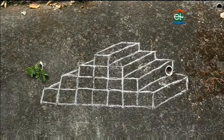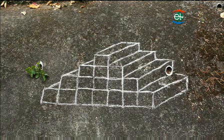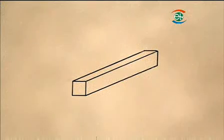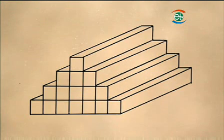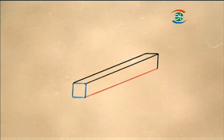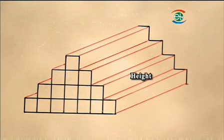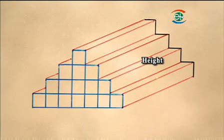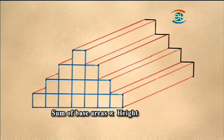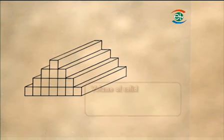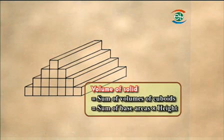How do you calculate the volume of this pile of cuboids? The solid is formed by many cuboids. Therefore, the volume of the solid equals the sum of the volumes of cuboids. As the volume of each cuboid equals the base area times height, and all cuboids have the same height, we can first add up the base areas of all the cuboids and then multiply by the height — in other words, the sum of the base areas times height.